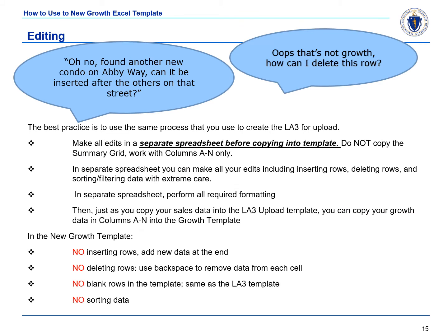The best practice for editing the New Growth Template is to use the same process that you would use to create the LA3 for upload. Make all your edits in a separate spreadsheet before copying into the template. Do not copy the summary grid — work with columns A through N only. In a separate spreadsheet, you can make all your edits, including inserting rows, deleting rows, and sorting or filtering data with extreme care. Perform all the required formatting there. Then, just as you copy your sales data into the LA3 upload template, you can copy your growth data into columns A through N in the growth template.